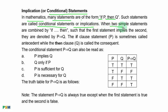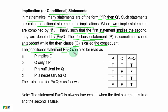When two simple statements are combined by 'if P, then Q', such that the first statement implies the second, they are denoted by P → Q. The conditional statement 'if P, then Q' can also be read as: P implies Q; Q only if P; P is sufficient for Q; or P is necessary for Q.